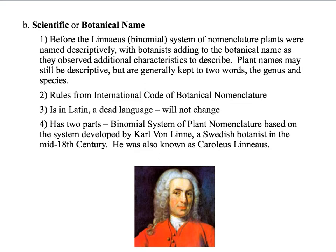The botanical name is really what you're going to go by when you're working in the industry, when you're researching plants, when you're trying to communicate with people about plants. It's sometimes a little bit more relaxed to use the common name, but if you want to be specific you need to use the botanical name. We will use the genus and species as the names, and this is considered the binomial system because it's two words — a binomial name.